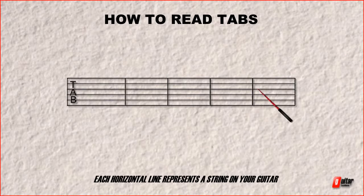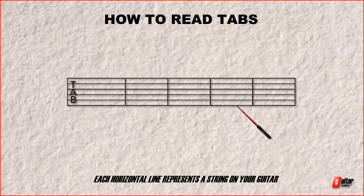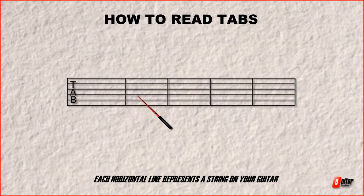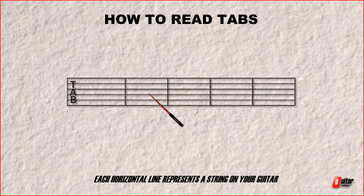Now this example here is basically a skeleton of a tab. So there's nothing notated on the tab and there's nothing for us to look at. We're just going to look at the different parts and what each part represents.